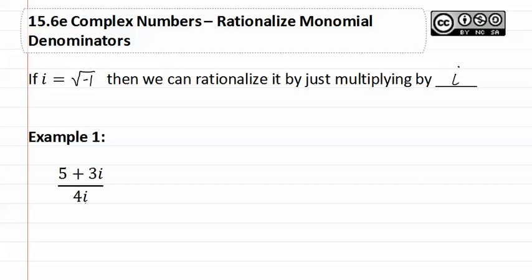Remember, if there's an i in the denominator, it's like having a square root of negative one in the denominator, and we cannot have radicals in the denominator.